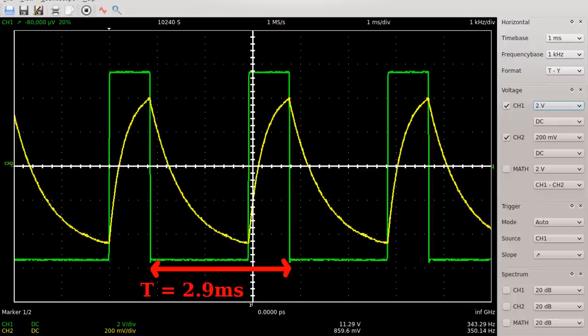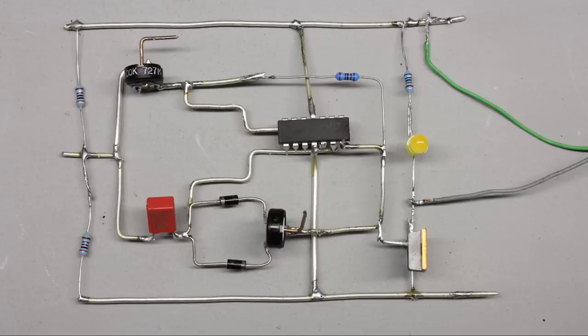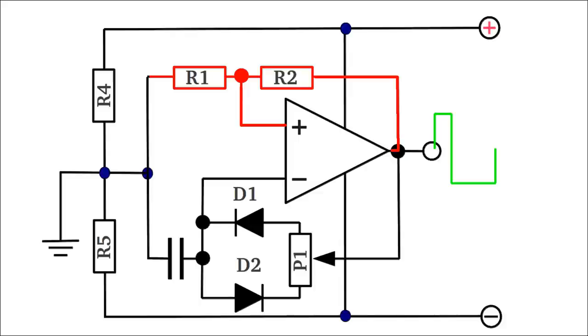The switching frequency can also be altered by varying the resistance of the coupling resistor network at the Schmitt trigger.